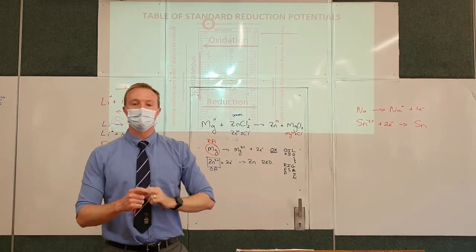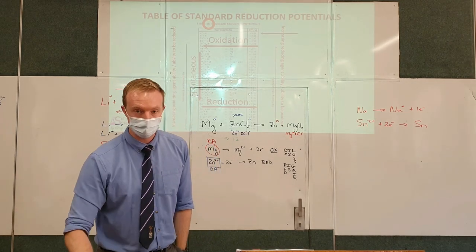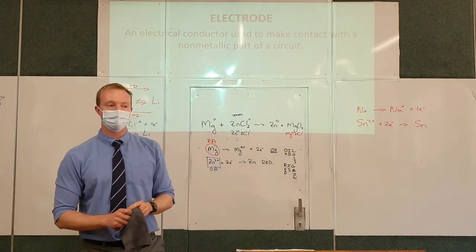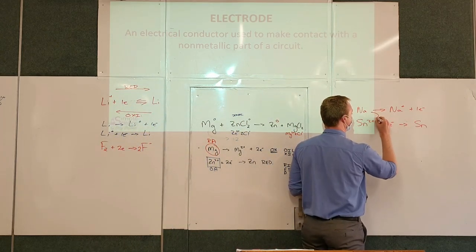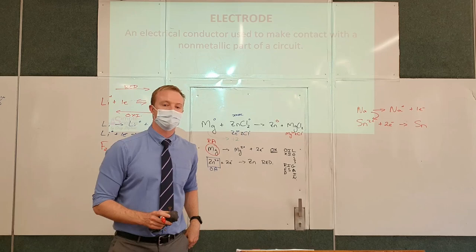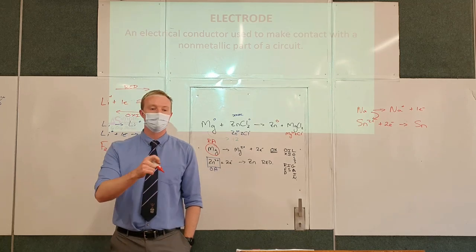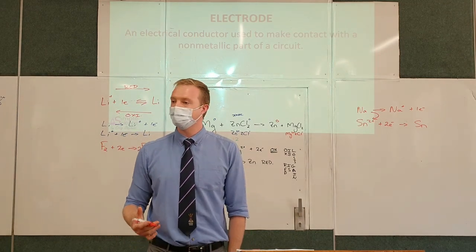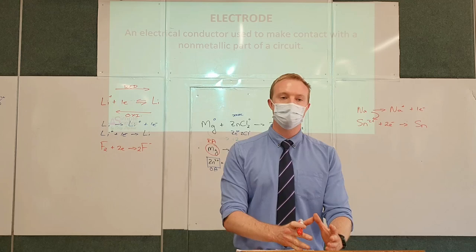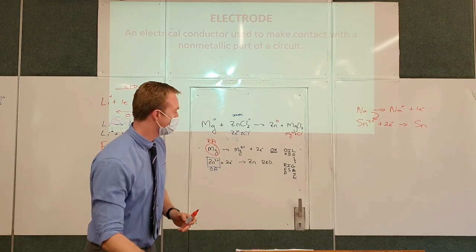Once we've created a natural flow of electrons — say from sodium to tin — we can move those electrons through an external circuit. By doing so, we create a flow of current, a flow of charge, and therefore we have created a battery. Essentially, this entire section is about using chemicals to convert chemical energy into electrical energy that we can use elsewhere.